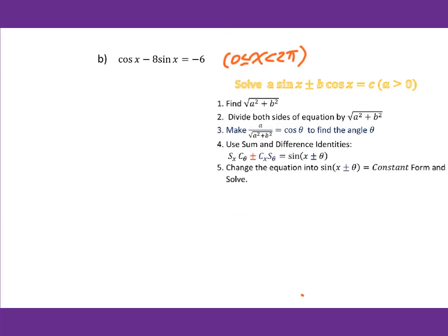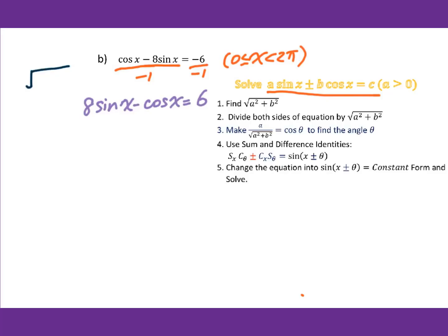Let's go to part B. First step: set up the standard form. We have negative 8 sin x, so divide both sides by negative 1 to get positive 8 sin x. We get 8 sin x minus cos x equals 6. Then find square root of A squared plus B squared: B is negative 1, so it's square root of 8 squared plus (−1) squared, which is square root of 65. Then divide the equation by square root of 65.